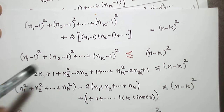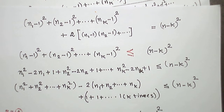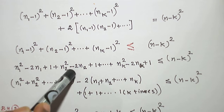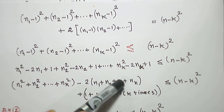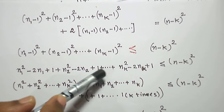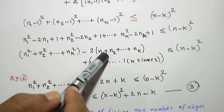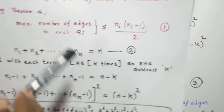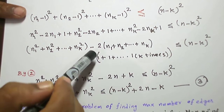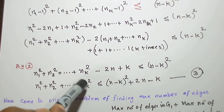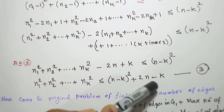I expand using the (a-b)² formula: (ni-1)² = ni² - 2ni + 1. Combining all squared terms gives n1² + n2² + ... + nk², the linear terms give -2(n1 + n2 + ... + nk), and the constant terms give k ones, totaling k. Substituting n1 + n2 + ... + nk = n, the inequality becomes: n1² + n2² + ... + nk² - 2n + k ≤ (n-k)², which rearranges to n1² + n2² + ... + nk² ≤ (n-k)² + 2n - k.